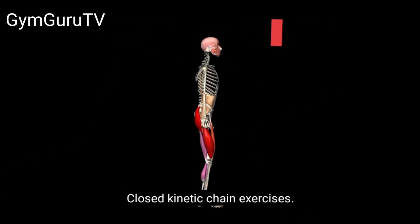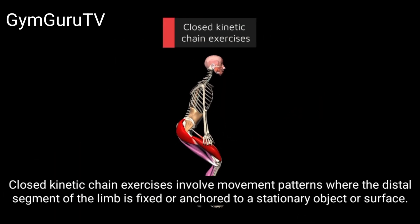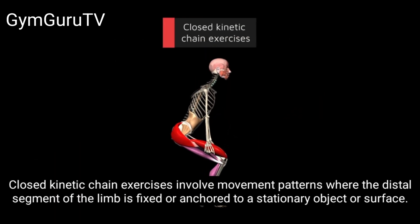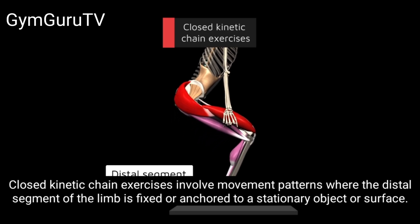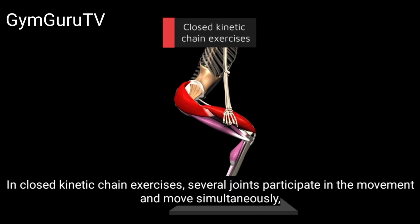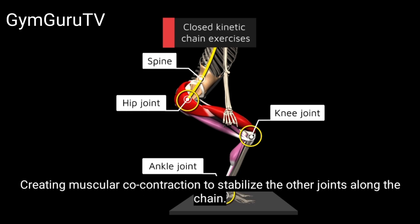Closed kinetic chain exercises involve movement patterns where the distal segment of the limb is fixed or anchored to a stationary object or surface. In closed kinetic chain exercises, several joints participate in the movement and move simultaneously, creating muscular co-contraction to stabilize the other joints along the chain.